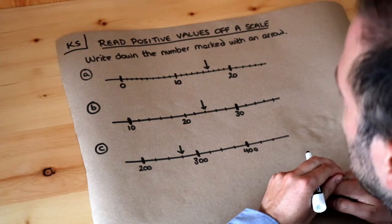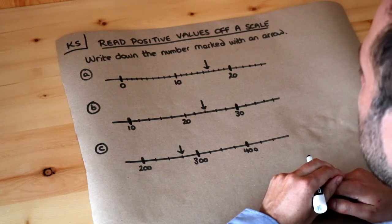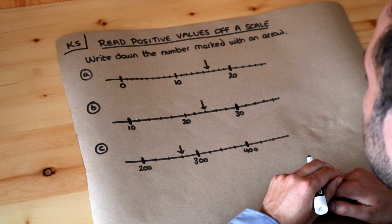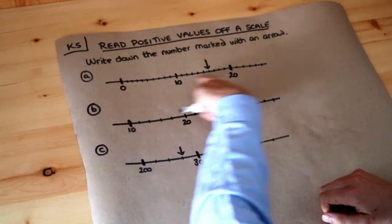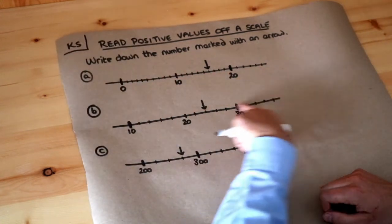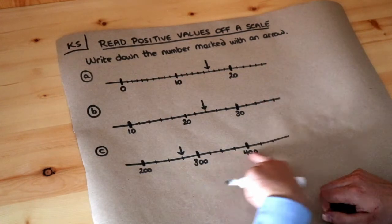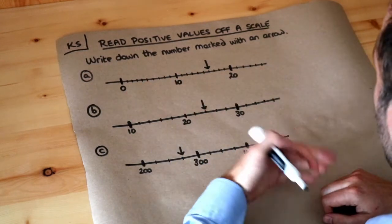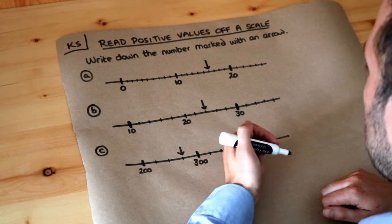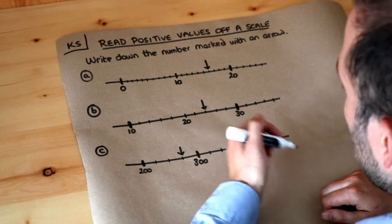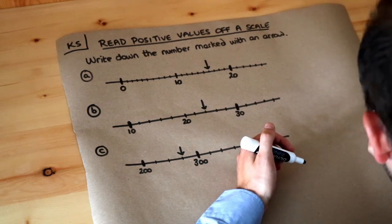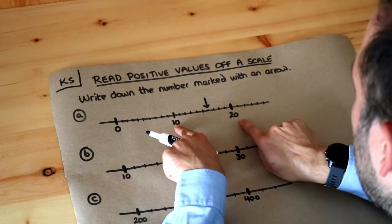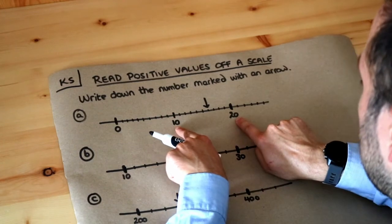Hello and welcome to Dr. Ross Mass's key skill video on reading positive values off a scale. These scales are called number lines, and we often get these kinds of scales when we're reading things like weight, height, or something on a ruler. The way to do this is to think about what the gap between the numbers is.